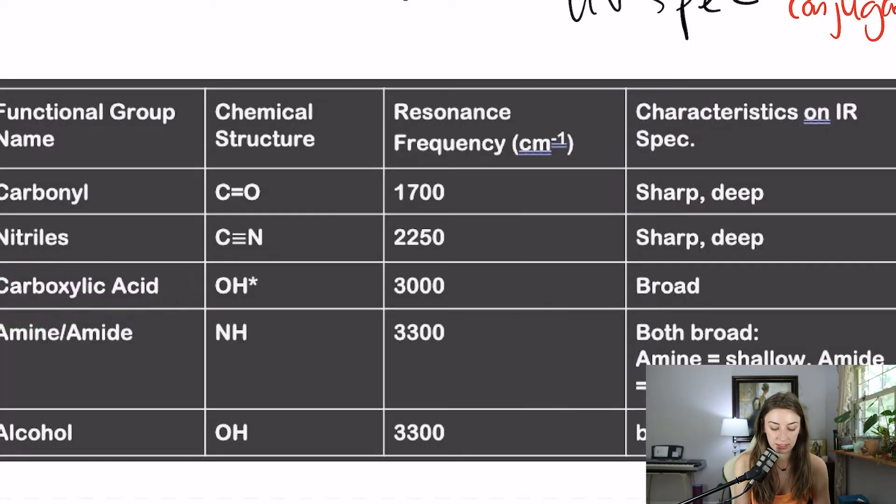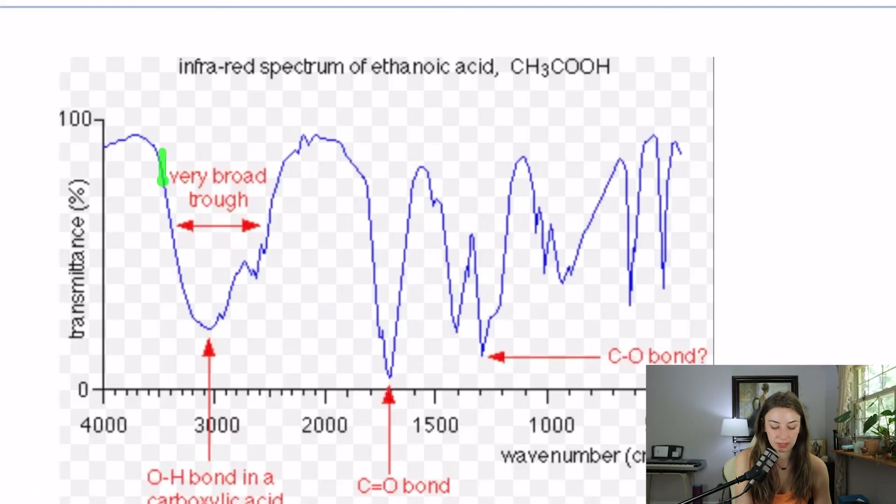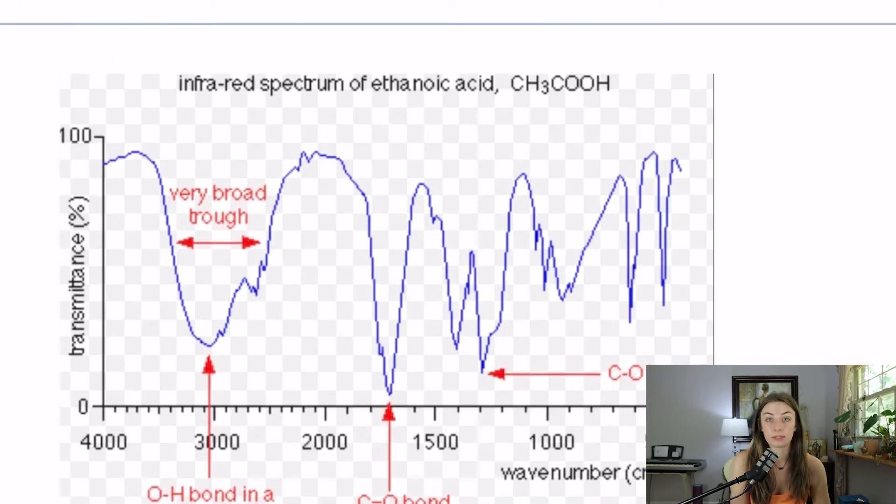The next one is a carboxylic acid. Now the important thing about this is what a carboxylic acid actually is, is a carbonyl and an alcohol. And since IR is only looking at one bond at a time, a carboxylic acid is just going to have the signature of a carbonyl and an alcohol in the same graph. So that's going to look like this. You have this U shaped alcohol signature, and you're going to have that V shaped deep carbonyl signature in the same molecule. That is the carboxylic acid.